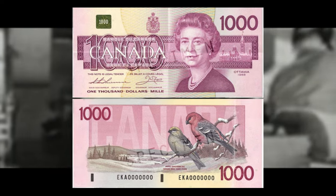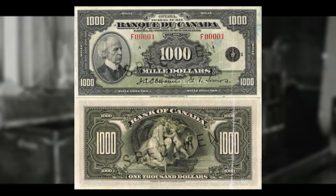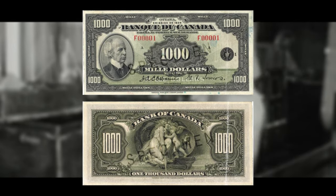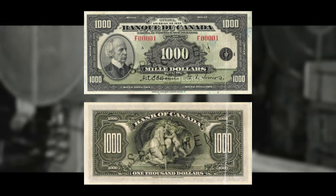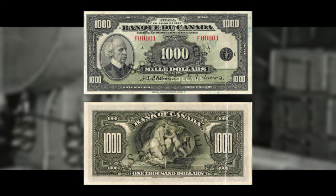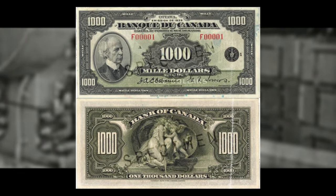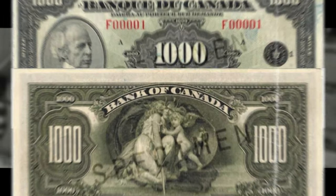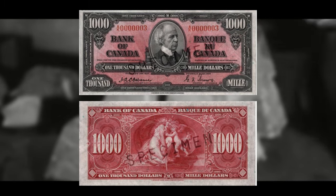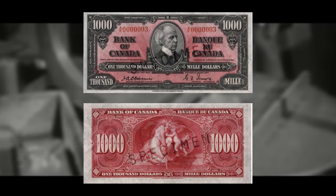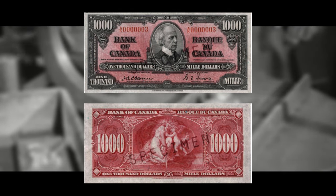In 1991, the government took further measures to restrict the use of $1,000 bills. Banks were required to report any transactions over $10,000 to the Financial Transactions and Report Analysis Centre of Canada, also known as FINTRAC, which was established to combat money laundering and other financial crimes. Despite these measures, the use of $1,000 bills in illegal activities continued. In 1999, the Bank of Canada made the decision to discontinue the note entirely, and the last $1,000 bills were printed in the year 2000.